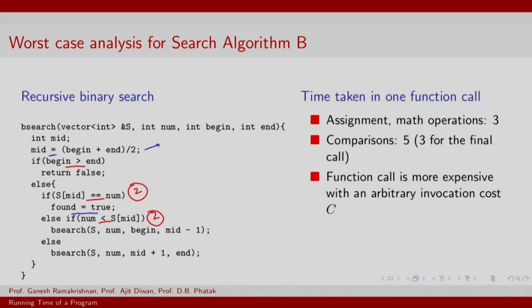Of course, for the final call you do not need to invoke any of these, and as a result for the final call you just return a false and skip the expensive computations. Sorry, this is the found is true, this is the final call. For the final call you can avoid doing the second access, which is check for if number is less than S mid, and exit with found equals true. So therefore, there are just three comparisons for the final call.